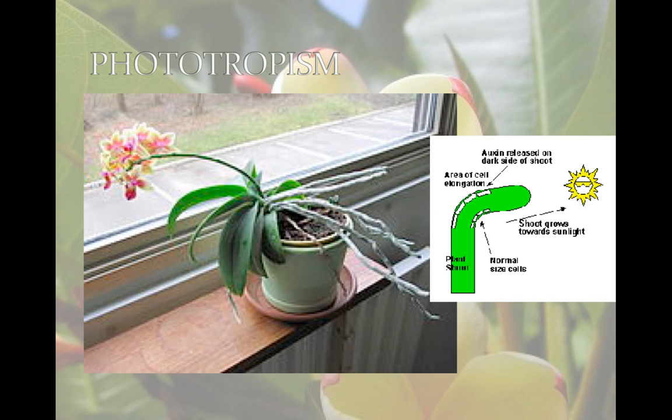Phototropism is the growth of a plant towards or away from light. Cells on the darker side are longer, making a shoot bend. Hormones control the growth rates of cells.